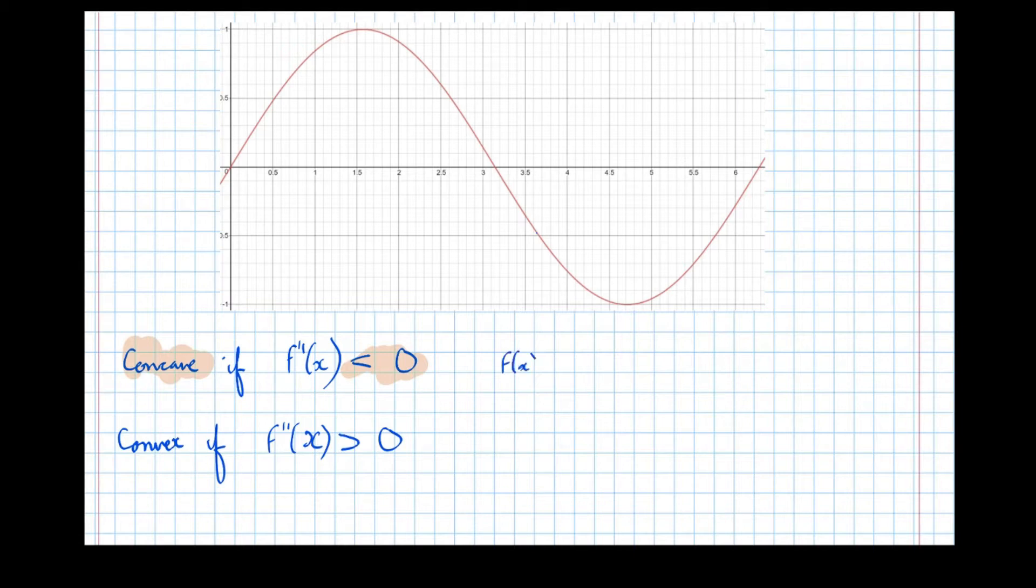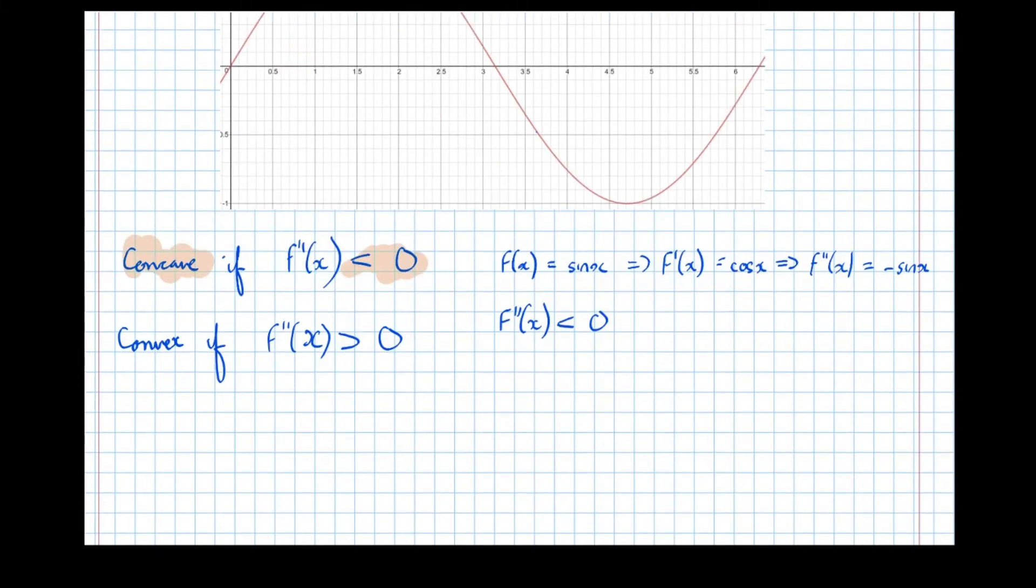So if we've got F(x) equals sine x, this means that the first differential is cos x, which means that the second differential is minus sine x. So the second differential minus sine x, I want to see where the second differential is less than 0. So where minus sine x is less than 0. Well, if I times both sides by minus 1, I get sine x being greater than 0.